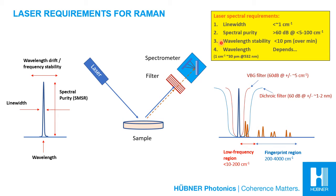However, it doesn't help to have a good spectral linewidth if the wavelength drifts during data acquisition. In order not to contribute to a decrease in spectral resolution, the wavelength drift of the laser should preferably be less than 10 picometers during the acquisition time, which could be on the order of minutes.